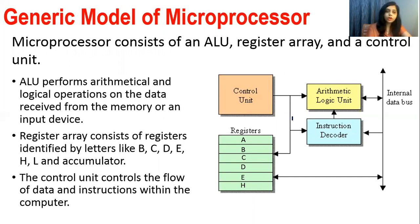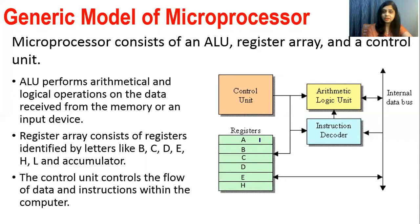Inside a microprocessor there is also a register array. A register is the basic building block of memory. Every processor has memory, and registers build that memory. One register can store 8 bits at a time. Intel generally names registers by alphabetical letters — A, B, C, D, H, L, etc. These general-purpose registers are used for temporary data storage.